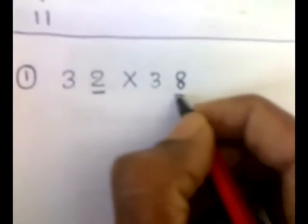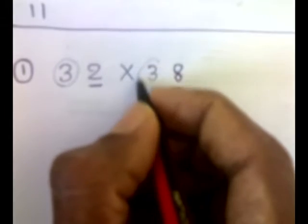The units place here is 2 and here is 8. So both of their addition should be 10 and the tens place should be same.